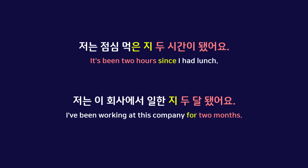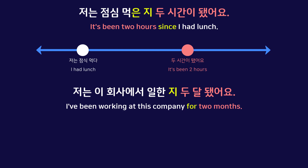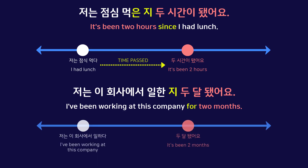Let's consider the meaning of how 은지 is used in these sentences. In the first sentence, the earlier action is 저는 점심 먹다 — I had lunch — and 두 시간이 됐어요 indicates how much time has passed since then. In the second sentence, the meaning is a little different: 은지 isn't used just to say how much time has passed since an earlier action, but rather that an earlier action has continued to the present for a certain amount of time. So 은지 can indicate both how much time has passed since an earlier action, and the length of time a past action has continued from the past to the present.